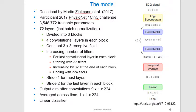The model was originally described by Martin Zilman, who was a participant in the 2017 FusioNet Challenge. It has about 3.5 million trainable parameters in 72 layers that are divided into six blocks.